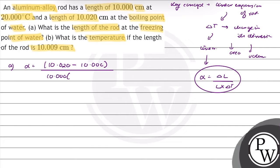The boiling point of water is 100 degree Celsius, and the initial temperature was 20 degree Celsius. Solving this, alpha will be equal to 2.5 into 10 raised to power minus 5 per Celsius.